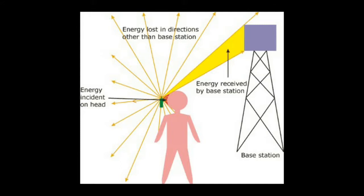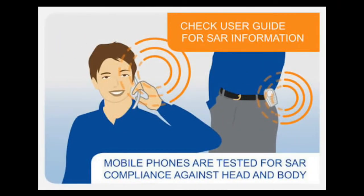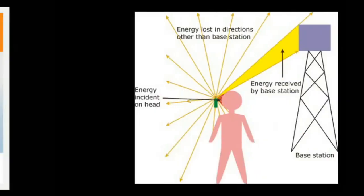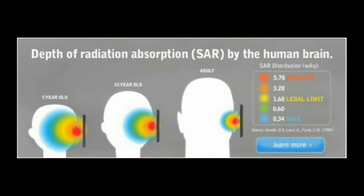India also follows the US standard. SAR specification can be checked in your mobile phone by dialing *#07# or you can refer to your user manual. All manufacturers have to follow these rules before manufacturing a mobile phone.